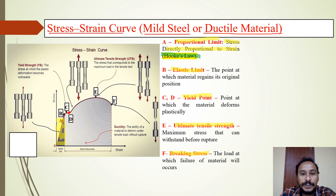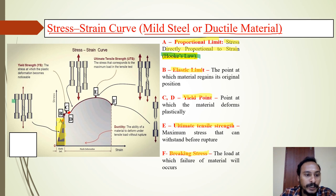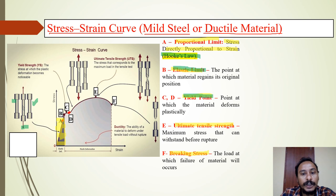The next point is the elastic limit. The elastic limit is the point at which the material will regain its original shape and size after removing the external load. If we apply load and the material deforms, once we remove the external load up to the elastic limit, the material is able to regain its original shape and size.